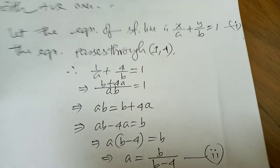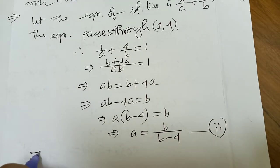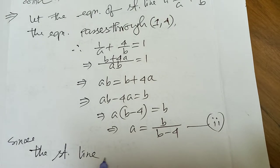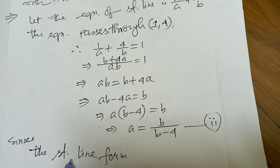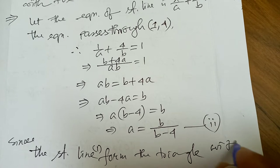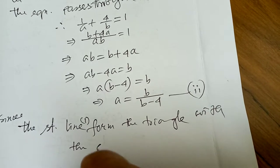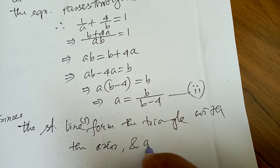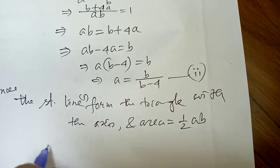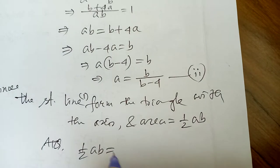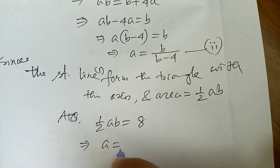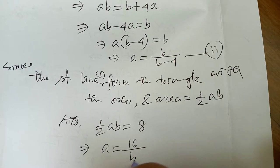Now since the straight line forms a triangle with the axes, the area of that triangle equals ½·a·b. According to the question, ½·a·b = 8 square units, so a·b = 16. Therefore a·b = 16/b — this gives equation number 3.